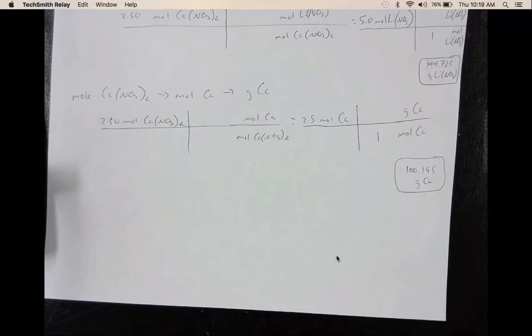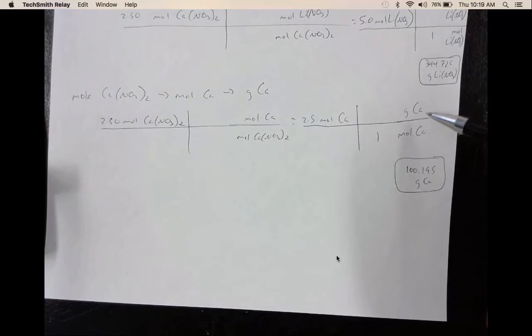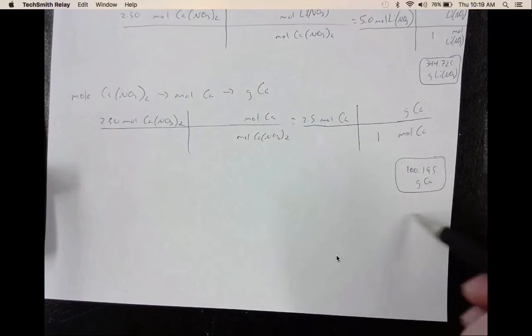So remember, the mass on the periodic table is always one mole of something. And you just need to look at the mass of calcium. When you solve this, you should get 100.195.